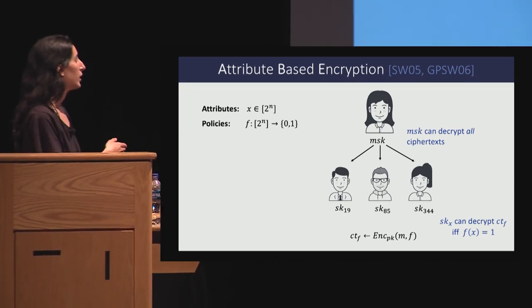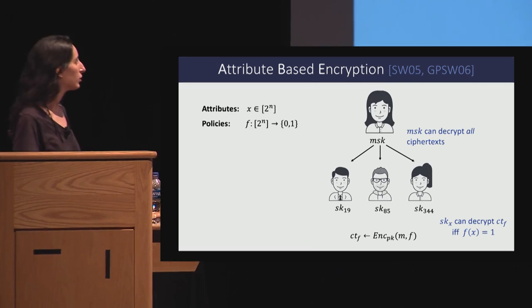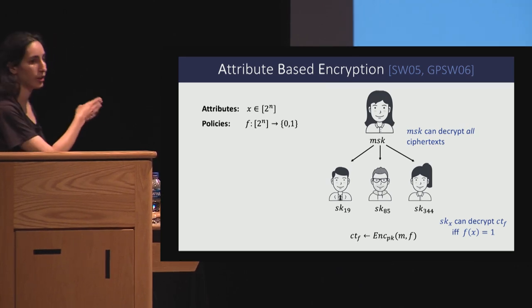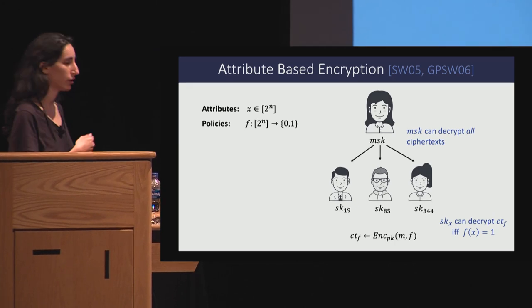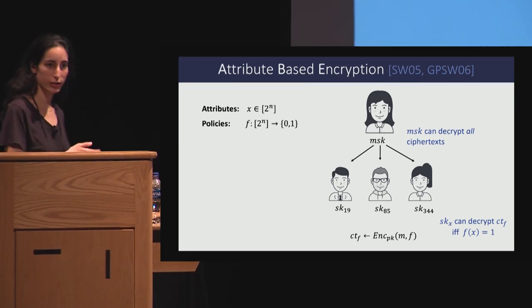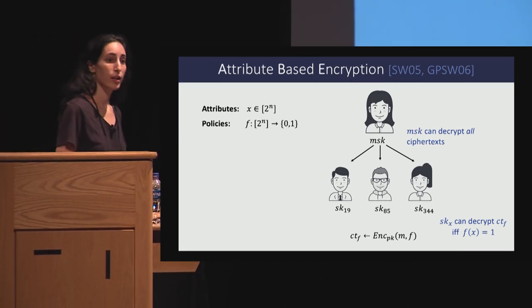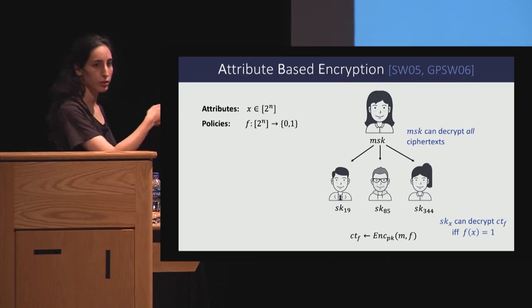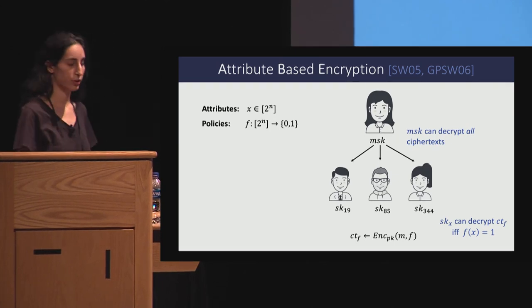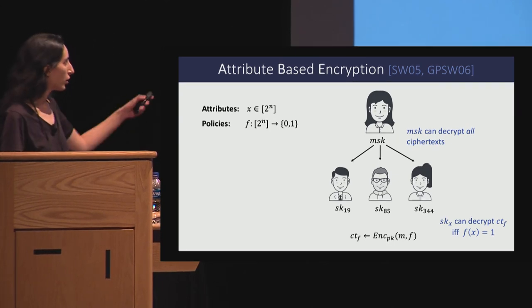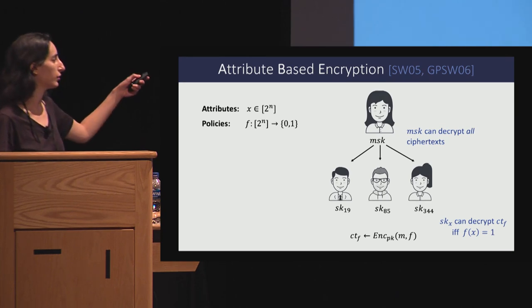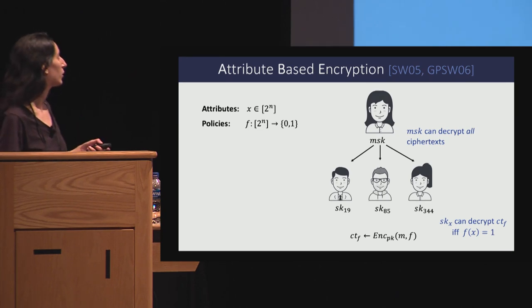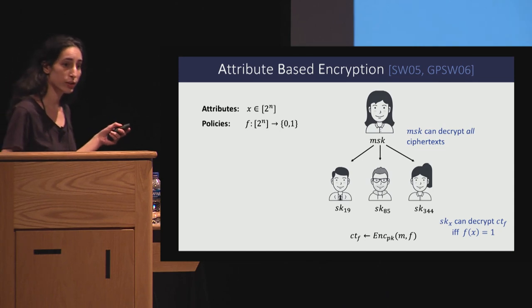The way it is formalized is as follows. There is an authority and she has a master secret key. The master secret key has full permissions — it can decrypt any ciphertext. And then given this master secret key, it is also possible to generate constrained keys.